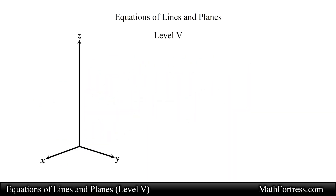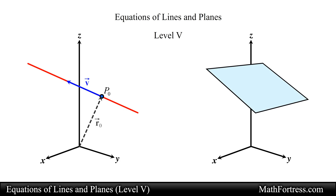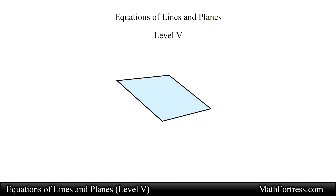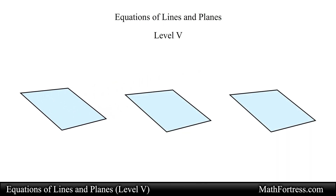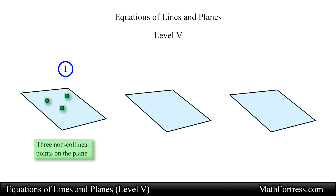Although a line in space is determined by a point and a direction, a plane in space is more difficult to describe. A single vector is not enough to convey the direction of a plane. A plane in three dimensional space is uniquely determined by one of three combinations. The first way is by knowing three non-collinear points on the plane. It is important that these three points are non-collinear, otherwise the three points represent a line or line segment.